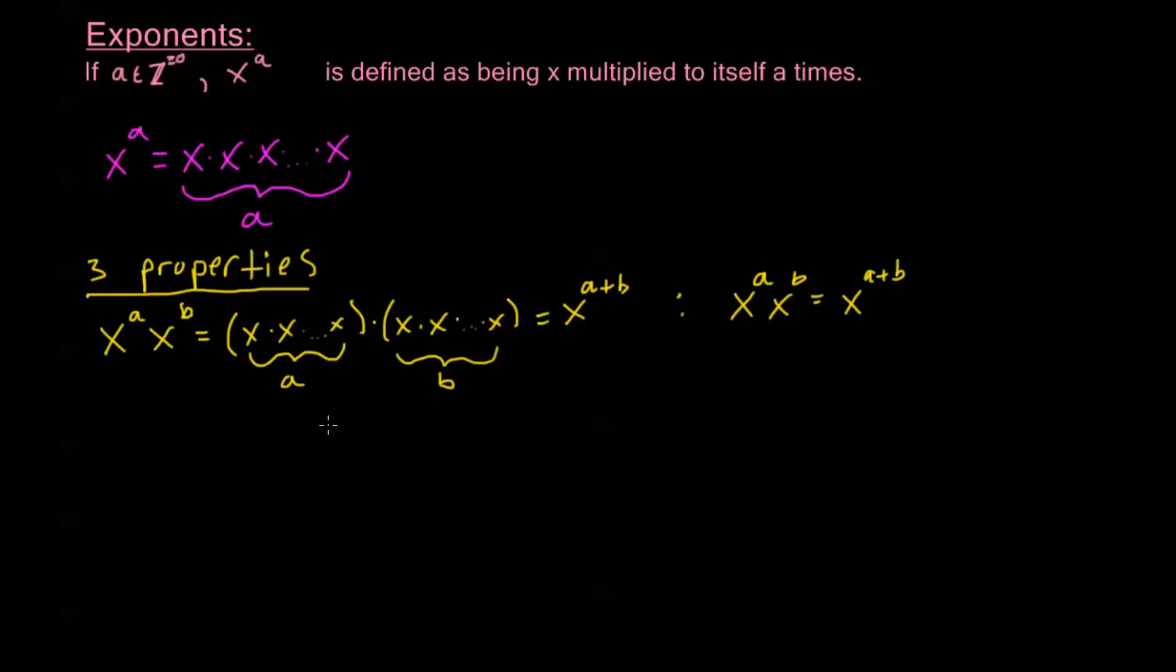Now we have our next property and that's going to be taking the power of a power or putting an exponent over an exponent. If I have x to the a and I raise that whole thing up to the b power, by our definitions here, I'm going to do inside the parentheses first. That's x multiplied to itself a times all raised to the b power. And now I'm going to use my definition of exponent again.